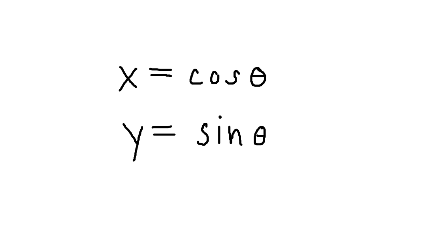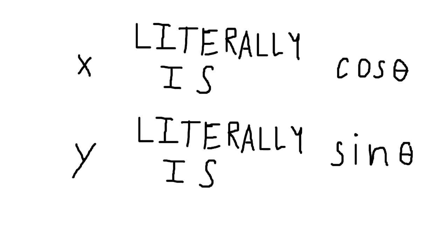So I'm just going to write these down real quick. x equals cosine of theta, and y equals sine of theta. So the cosine of theta is quite literally the distance to the right when looking at a point on the perimeter of the circle. Similarly, sine of theta is the distance up.